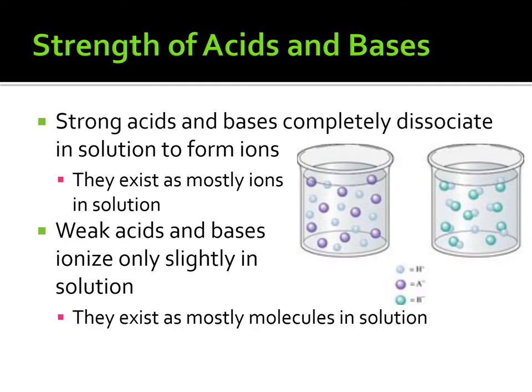Now we're going to move to the top right-hand side of your graphic organizer. You'll see the title: Strengths of Acids and Bases. Strong acids and bases completely dissociate in solution to form ions — that's the key. Strong basically means they dissolve completely, releasing large quantities of ions into solution. In other words, they exist as ions in solution.